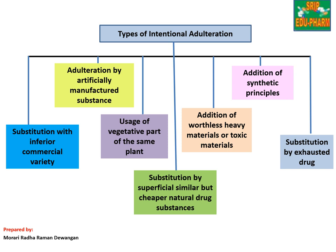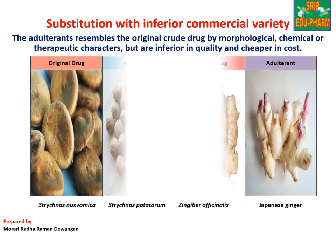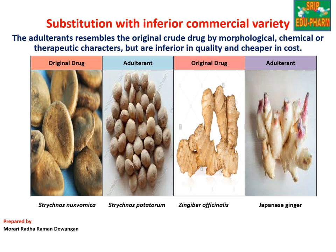Seventh is substitution by exhausted drug. Regarding substitution with inferior commercial variety — in this type of adulteration, the morphological, chemical, and therapeutic characteristics are the same as the original drug, but its quality and cost-effectiveness are lower than the original drug.